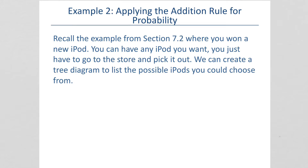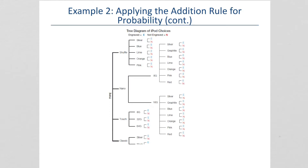Recall the example from 7-2 where you won a new iPod. You can have any iPod you want — you just have to go to the store and pick it out. We can create a tree diagram to list the possible iPods you could choose from. You could get a Shuffle, a Nano, a Touch, or a Classic. In the Shuffle, there's Silver, Blue, Lime, Orange, and Pink, and any of those could be engraved or not. In a Nano, you could get an 8G or a 16G with all the colors, engraved or not.